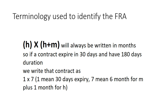For example, suppose an FRA expires in 30 days and the duration of the underlying loan is 180 days. Converting: 30 days equals one month, so H equals one month and M equals six months. Since we write H into H plus M, it becomes 1 into 7, because H plus M equals seven months. So we are dealing with a 1×7 FRA. That is how to write the FRA terminology.